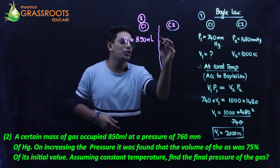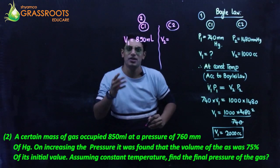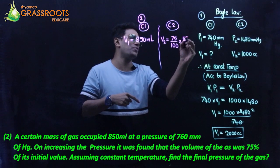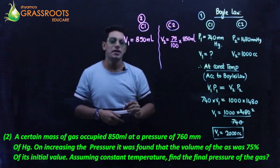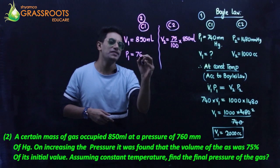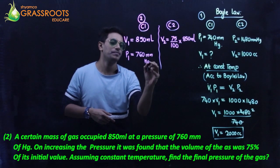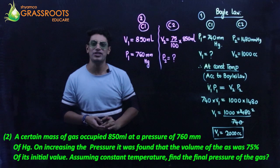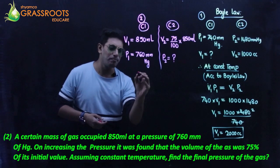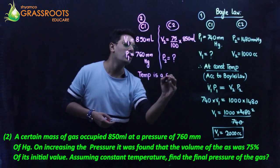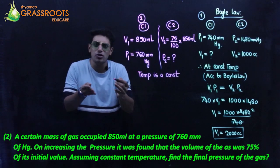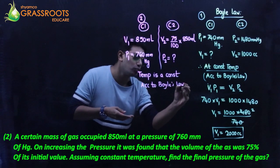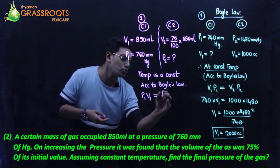Volume two is 75% of this, that means (75/100) × 850. Pressure one is 760 mmHg and you need to find pressure two. Temperature is constant, so according to Boyle's law, V1 × P1 = P2 × V2.